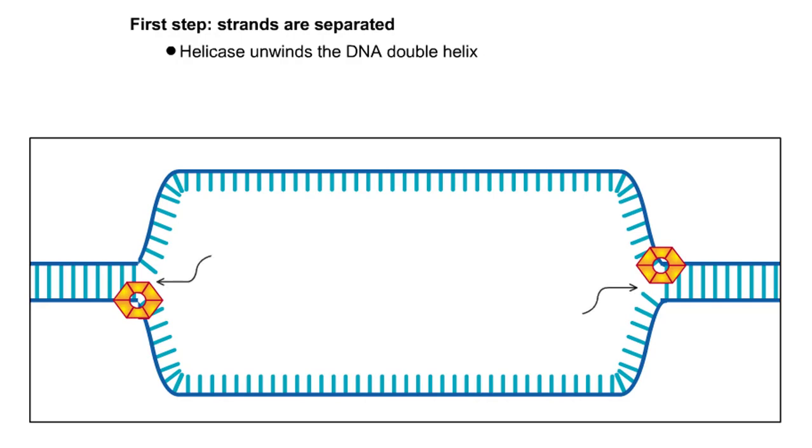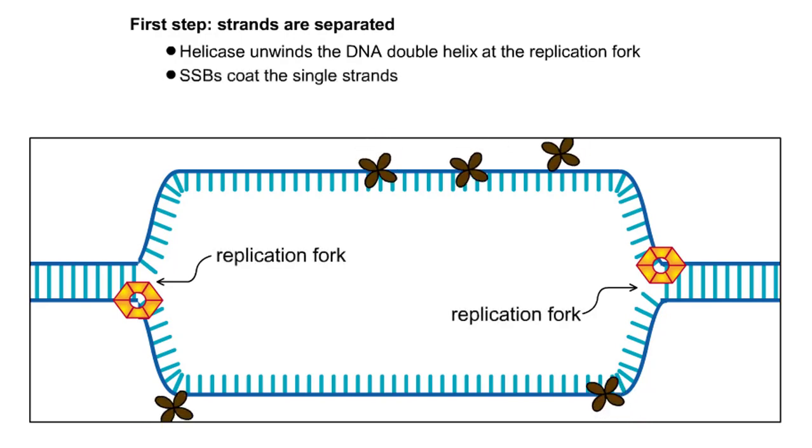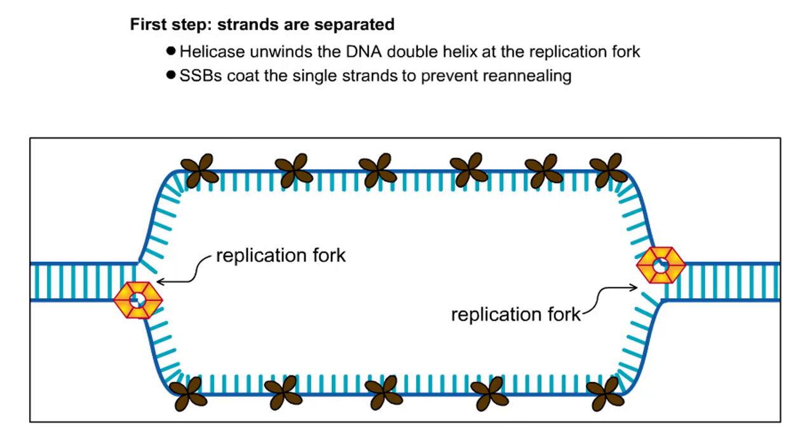The point where the DNA is separated into single strands and where new DNA will be synthesized is known as the replication fork. Single strand binding proteins, or SSBs, quickly coat the newly exposed single strands. SSBs maintain the separated strands during DNA replication.